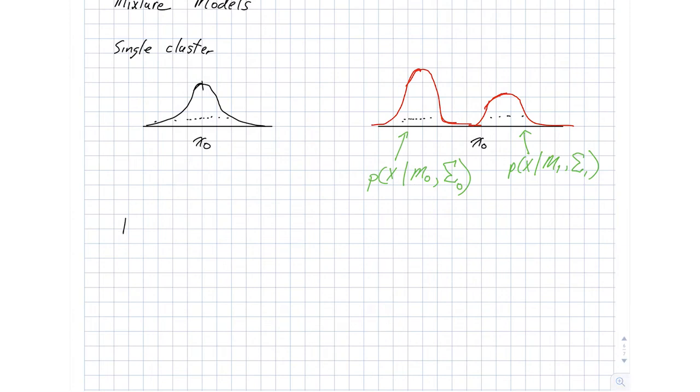The likelihood function here looks like this. We have a likelihood of x, some sample, and that's going to be a function of several different things. It has to be the parameters of our two constituent Gaussians. So we have our M0 and our sigma 0, and M1 and sigma 1.